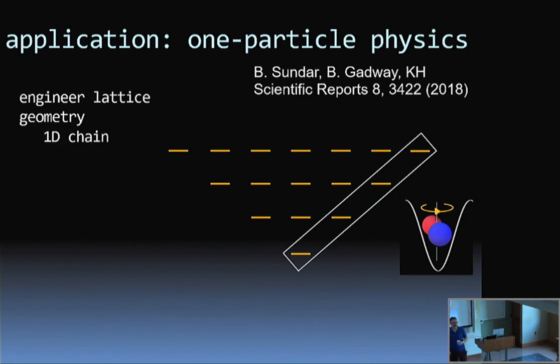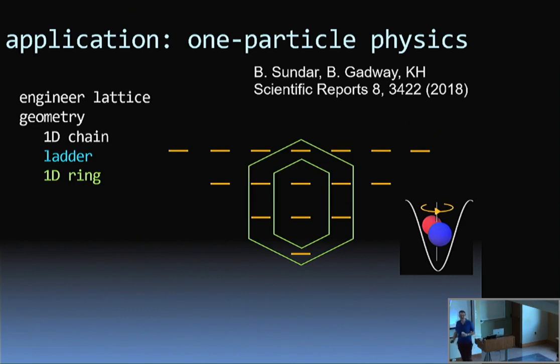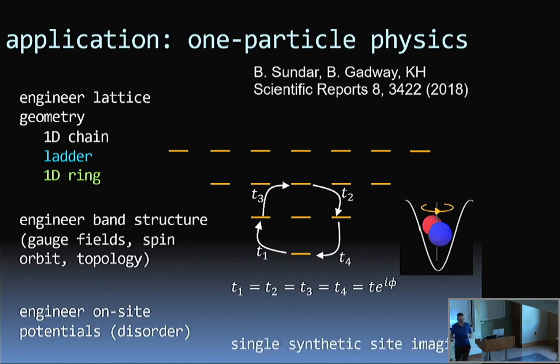This lets you engineer whatever lattice structures you want in the synthetic dimension. The simplest one is maybe we use this set of levels, and this looks like a one-dimensional chain in the synthetic dimension. If you have a magnetic field on, break some of these degeneracies, these levels are no longer degenerate, so you can't leak out of this manifold. But we don't have to do something boring like a 1D chain. We could do a ladder, or we could do a ring with periodic boundary conditions. We can control not only the amplitude of these tunnelings, but we can control the phases of these tunnelings. This means that we can engineer gauge fields, effective spin-orbit coupling, topological band structures.